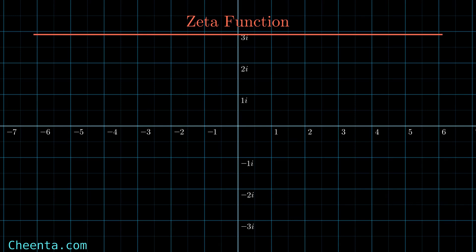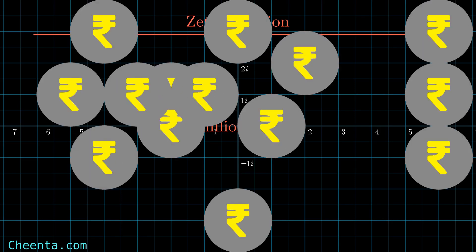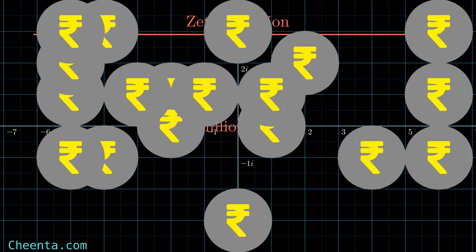The Zeta function is one of the most hot topics in present mathematics. Most people know about it because there is a 1 million dollar prize for anyone who can find the non-trivial zeros of this Zeta function. Now, jokes aside, this function is very important in our modern number theory, and why it is important we will discuss in this video.